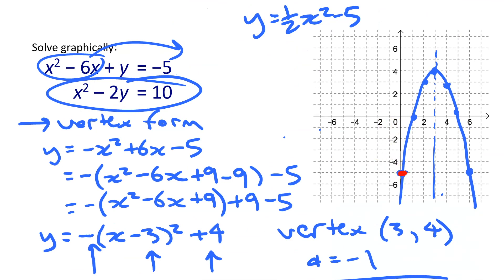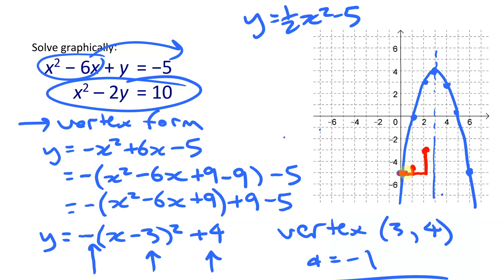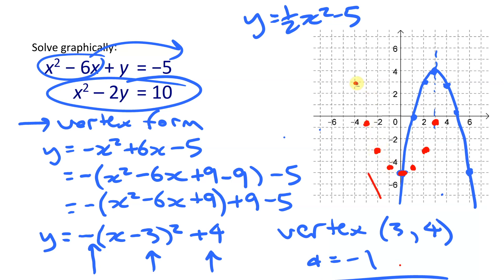With vertex at (0, -5) and a = ½, the parabola opens upward with the standard pattern halved: instead of 1→1, 2→4, 3→9, we get 1→½, 2→2, 3→4.5, 4→8. Plot those points symmetrically on both sides and draw a smooth curve through them.